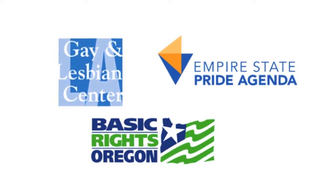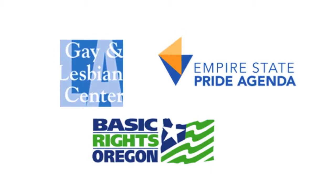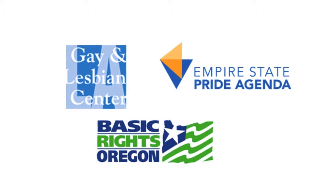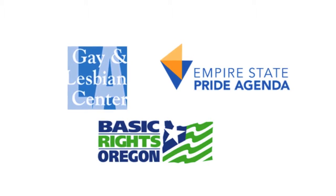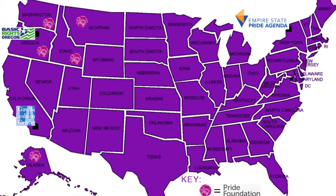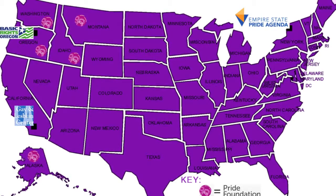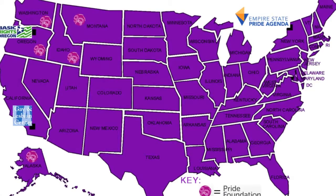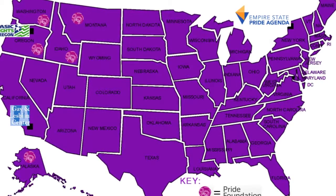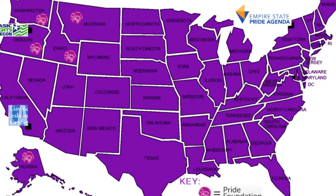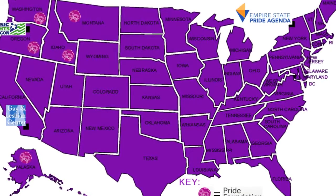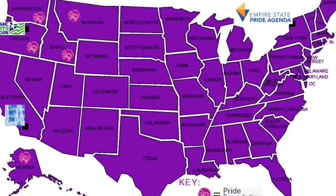Its main competitors include the LA Gay and Lesbian Center, Basic Rights Oregon, and the Empire State Pride Agenda. Pride Foundation's differentiating factors not only lie within the services they provide, but also in their span. As you can see from the map, Pride Foundation actually reaches 5 states in the United States, whereas its competitors only reach a selective state.